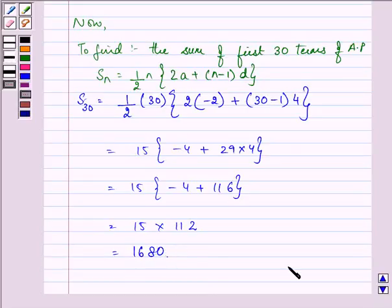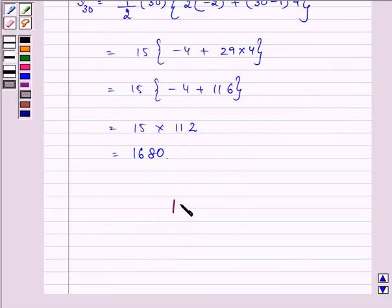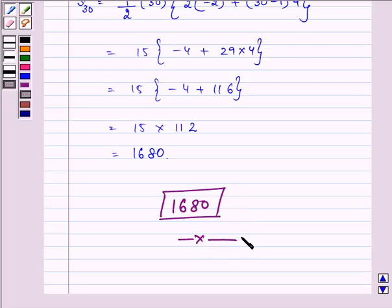So, the answer to this question is 1680, that is the sum of the first 30 terms of an arithmetic progression whose second term is 2 and the seventh term is 22. Right? So, hope you understood it well. Do take care of your calculations and have a nice day.